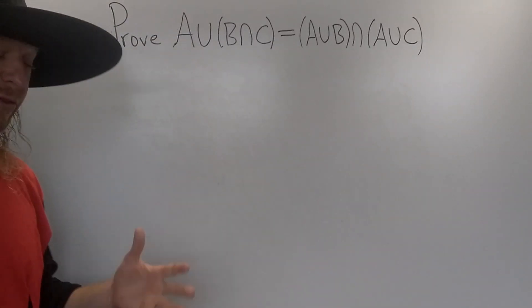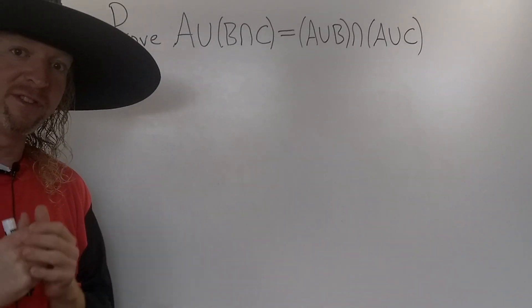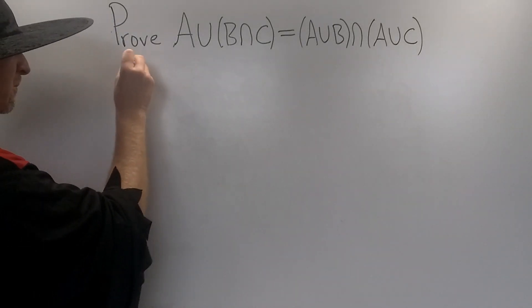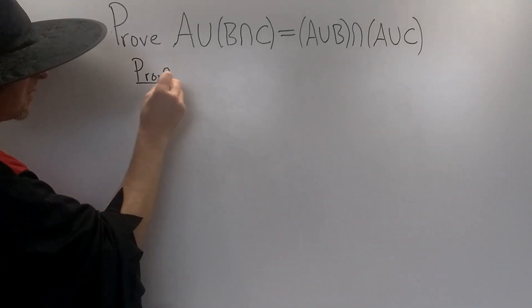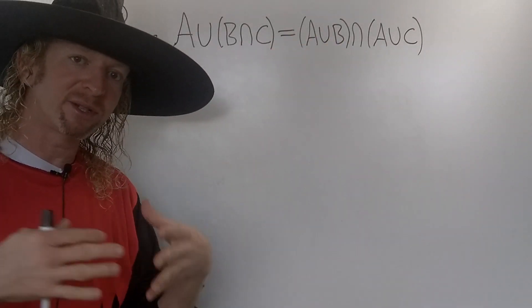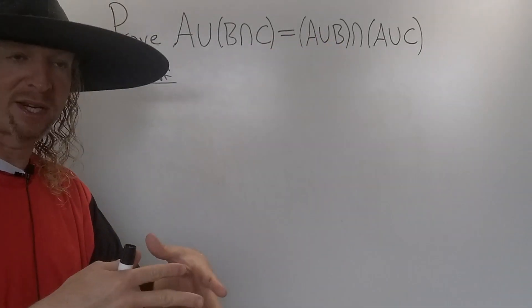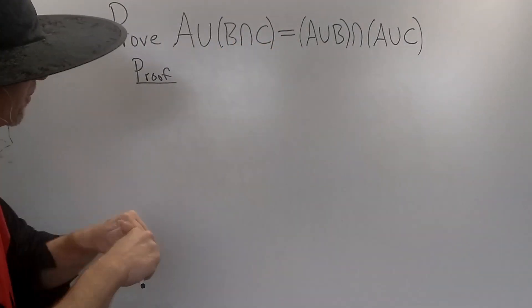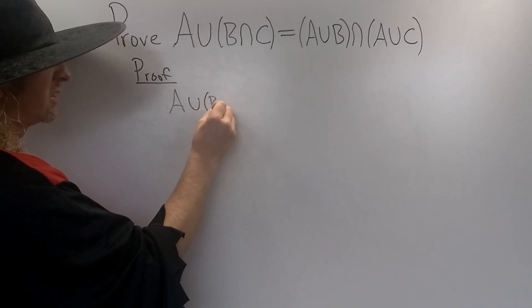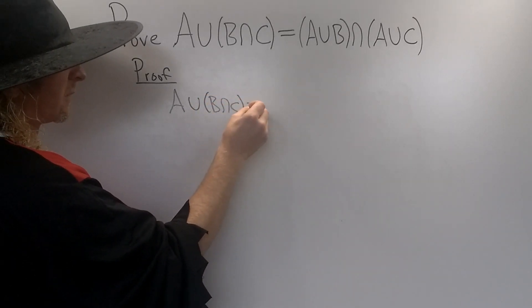What's going on? In this problem we're going to prove one of the distributive laws in the theory of sets. Let's go ahead and go through the proof. We'll start by showing that this set is equal to this set. We're just going to take a direct approach - write down what this means and then directly show it's equal to this. So we have A union B intersection C.